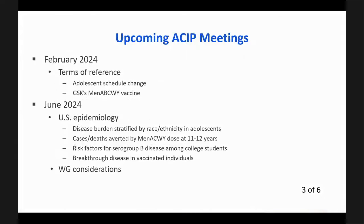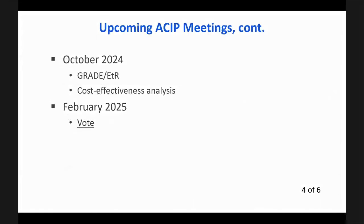At this meeting, we'll be going over those two topics. At the June 2024 meeting, we'll be reviewing the epidemiology of meningitis disease — disease burden, causes, cases and deaths averted by the MenACWY vaccine, risk factors for serogroup B disease, and breakthrough disease in vaccinated individuals, and how those considerations are influencing our decisions. In October 2024, we'll present a GRADE and ETR analysis and a cost-effectiveness analysis, and we hope to plan for a vote in February 2025.